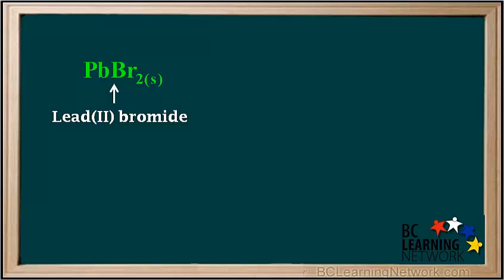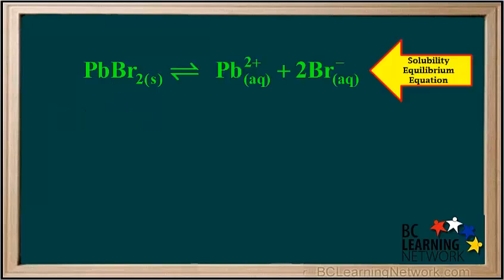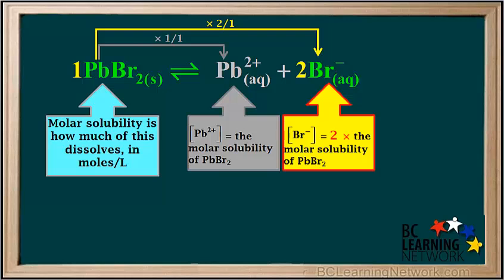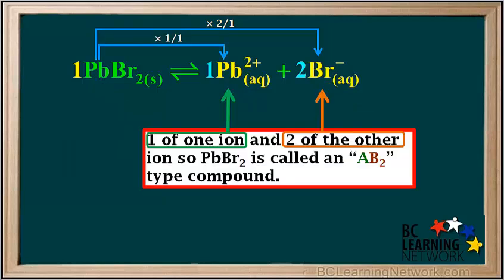Now we will consider another low-solubility compound, lead(II) bromide, or PbBr2. Its solubility equilibrium equation is PbBr2 in equilibrium with Pb2+ plus 2Br-. There is a 1 to 1 ratio for Pb2+, so its concentration equals the molar solubility of PbBr2. But there is a 2 to 1 ratio of Br- to PbBr2, so the concentration of Br- is 2 times the molar solubility. Therefore, we call PbBr2 an AB2 type compound.